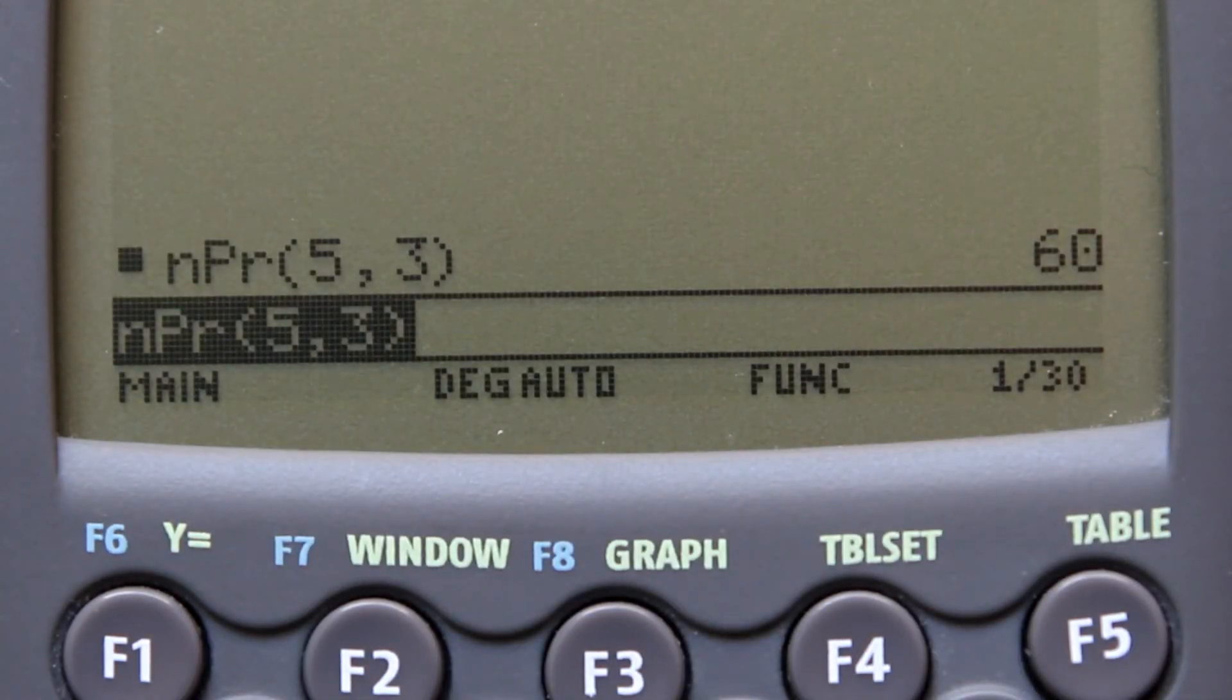If you choose any three of the five colored boxes, you can make 60 different ordered combinations. If you like this video, please give it a thumbs up and subscribe to this channel.